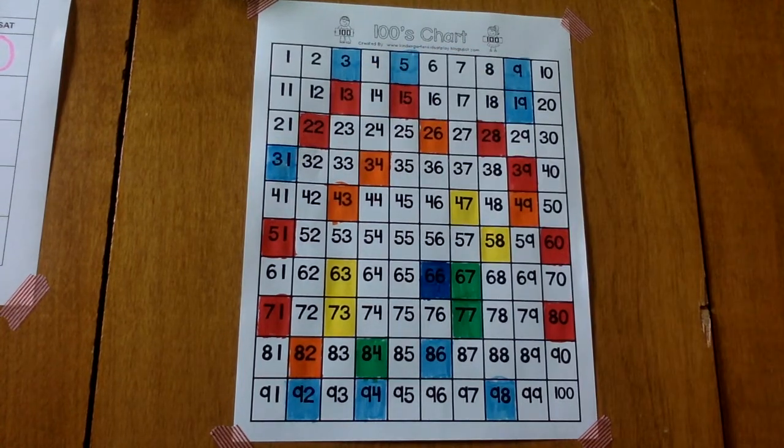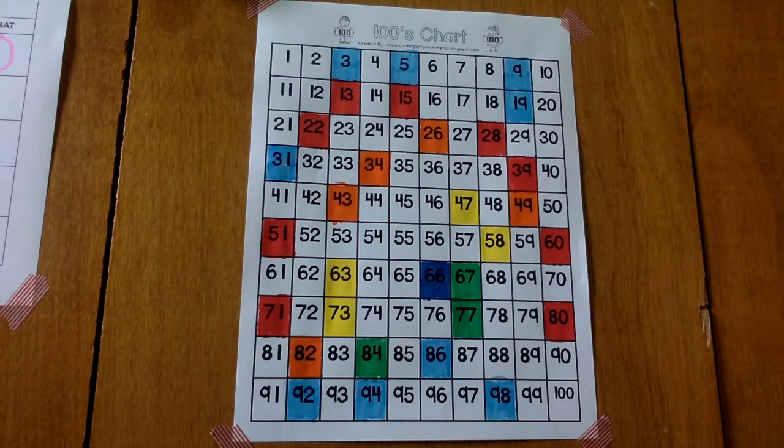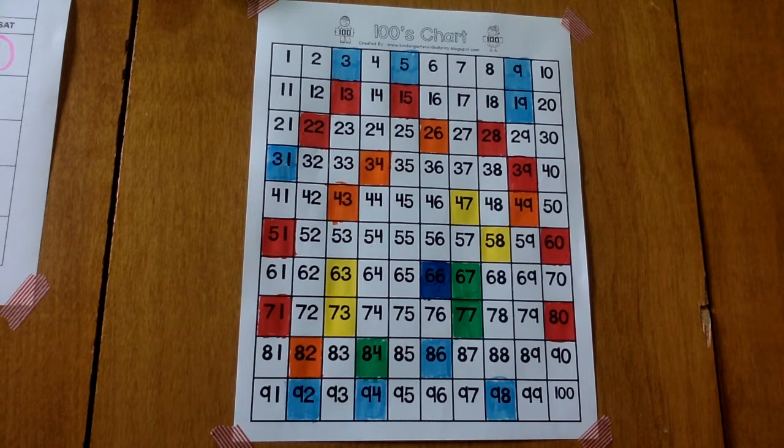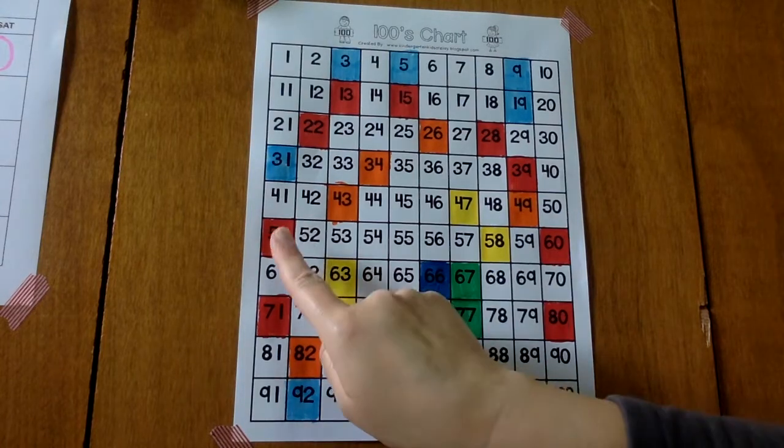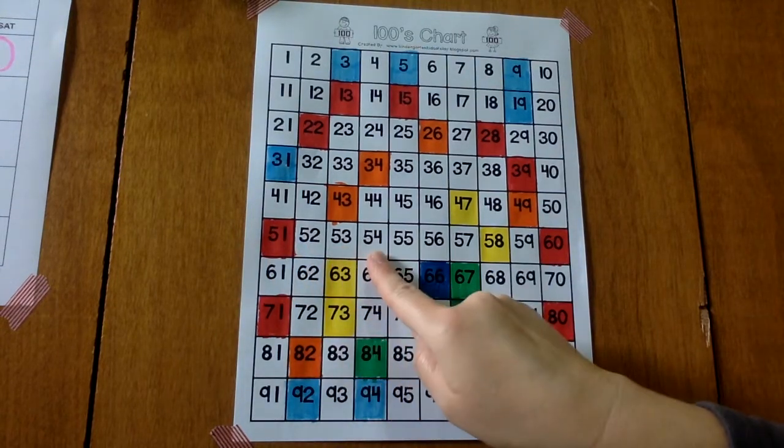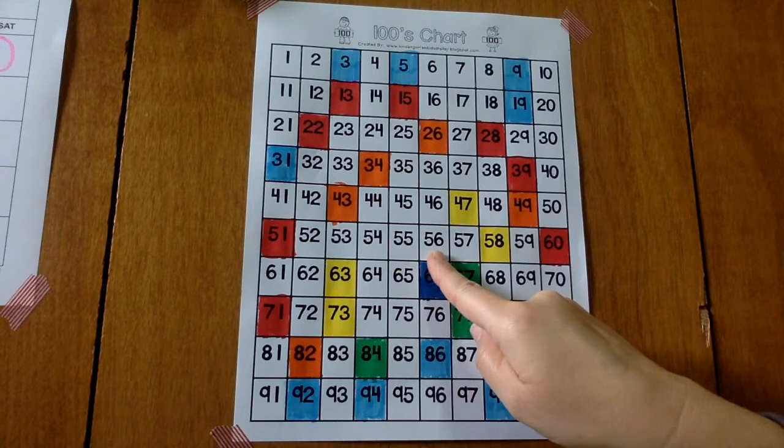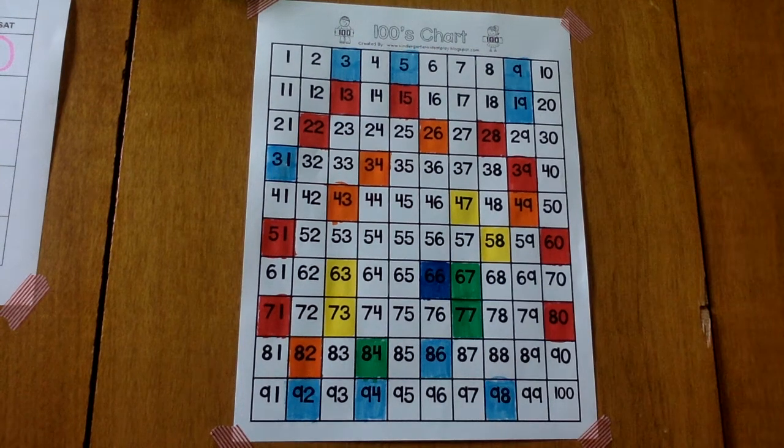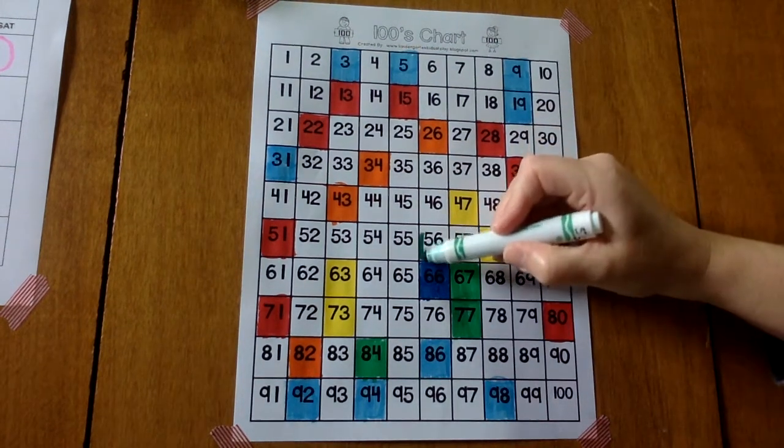And our next number, 56. In the 50s row, 51, 52, 53, 54, 55, 56. A 5 and a 6, green.